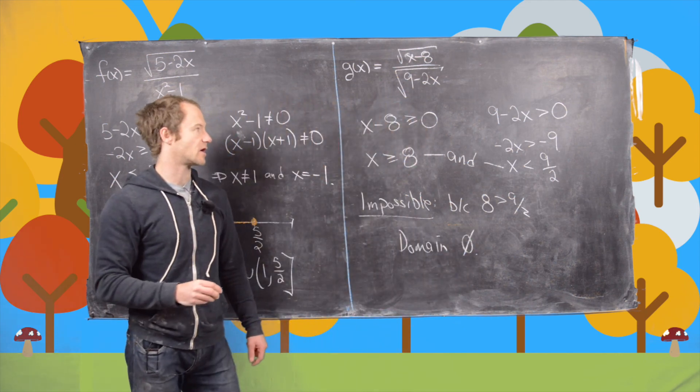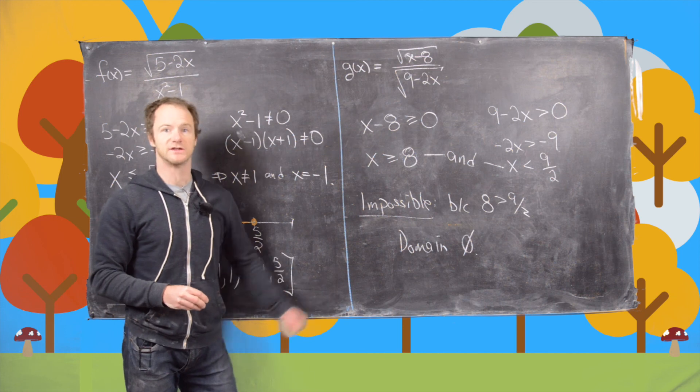So that means your domain here is the empty set. So no points are allowed to be plugged into this function. So that's the end of the video.